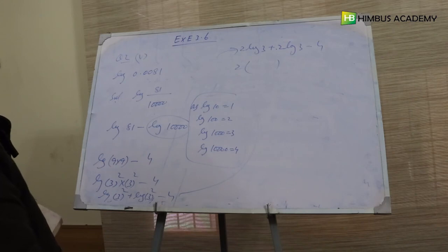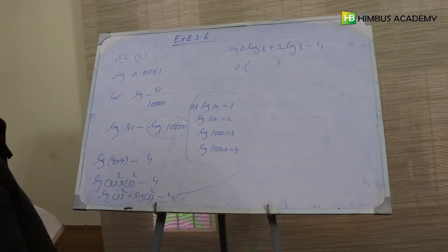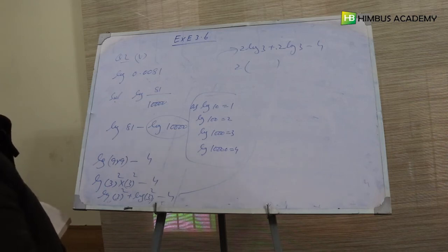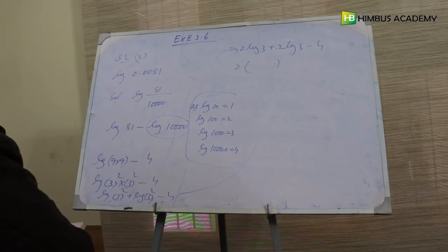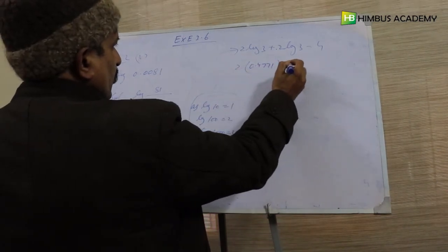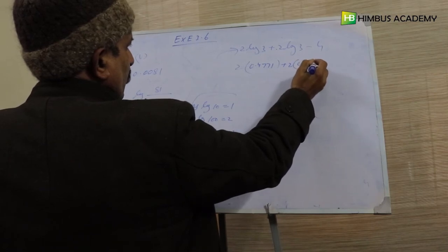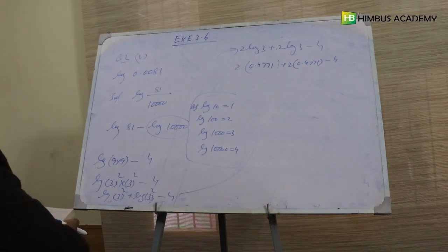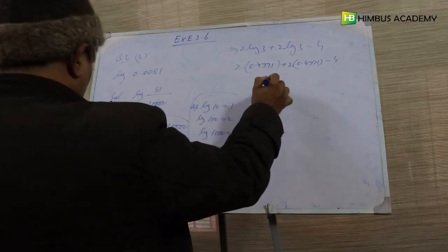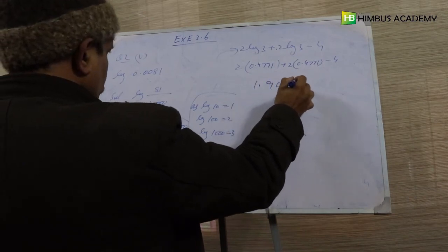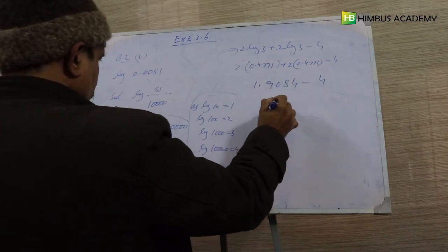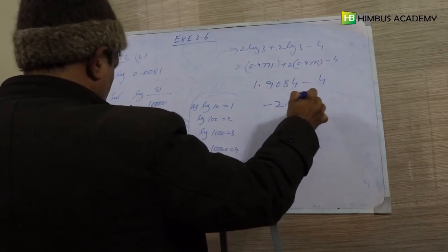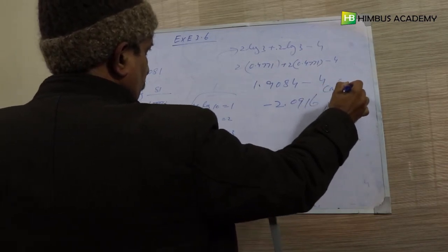So: 2 × 0.4771 plus 2 × 0.4771 minus 4 = 0.9542 + 0.9542 minus 4 = 1.9084 − 4 = minus 2.0916. Log of 0.0081 is equal to −2.0916. یہ ہمارا answer ہے، calculator استعمال کرتے ہوئے۔